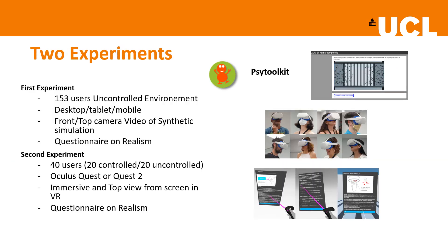We designed two user studies. In the first, 153 participants performed the experiment remotely. We showed two videos of rectilinear trajectory crowd simulations from different camera angles — front view and aerial view — and asked participants to evaluate the realism via questionnaire.